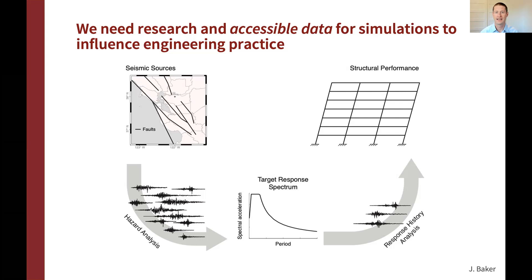A couple of notes: there is this handoff at the target response spectrum. It's rare in engineering practice to go directly from a seismic source, simulate a ground motion, and input that into a structure — we use the target response spectrum. The amplitude of the ground motions is specified by that spectrum; we only need to find time series consistent with that amplitude and other anticipated characteristics. Finally, we have a relatively small number of ground motions — typically on the order of half a dozen or a dozen in engineering practice.